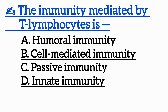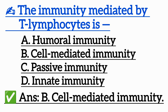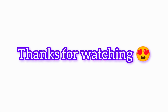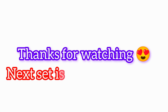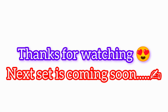Question 19: The immunity mediated by T lymphocytes is — Option A: Humoral immunity, Option B: Cell-mediated immunity, Option C: Passive immunity, Option D: Innate immunity. Correct answer is Option B: Cell-mediated immunity.